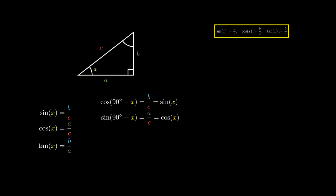We can take sine of X divided by cosine of X to obtain B over C divided by A over C. Doing a bit of algebra, the C's cancel out, giving us B over A, and this simplifies to the tangent of X.